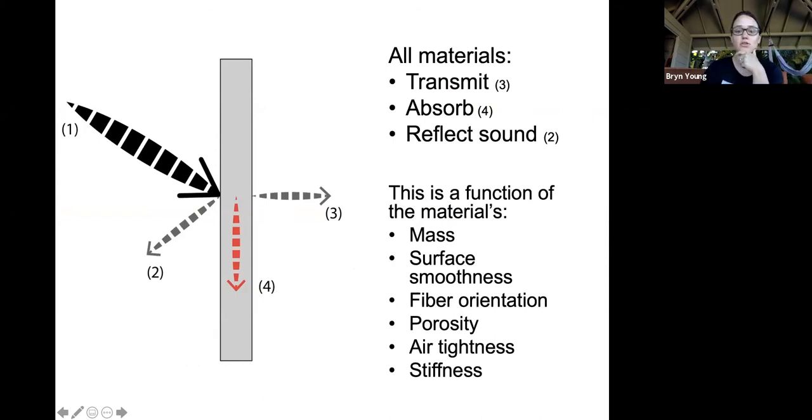All materials transmit sound, which means the sound goes through it. Think of it as two spaces. There's a room over here and a room over here, and this is the wall in between. Over here, there's a loud party going on. There is going to be some noise that transmits through the wall, and then some noise that is absorbed into the wall, and then some noise that is reflective.